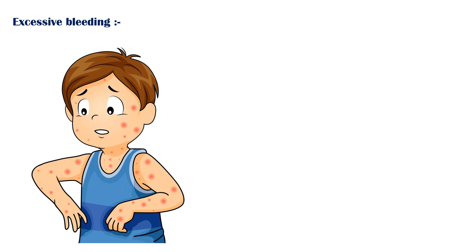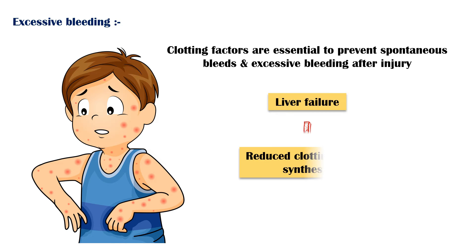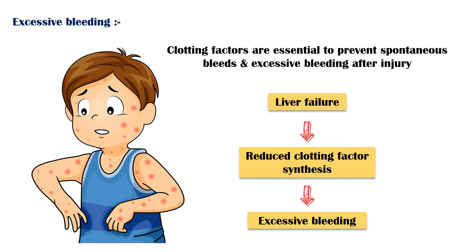Excessive bleeding. Blood clotting factors are essential for preventing spontaneous bleeds and excessive bleeding after an injury. They are synthesized by the liver. As the liver fails, the synthesis of these clotting factors will be reduced, leading to excessive bleeding.